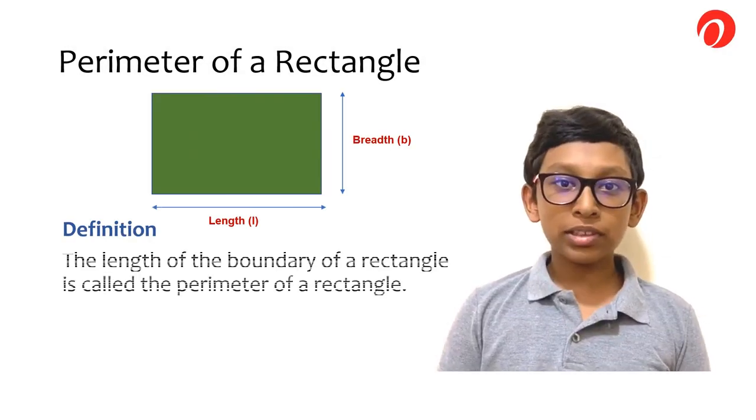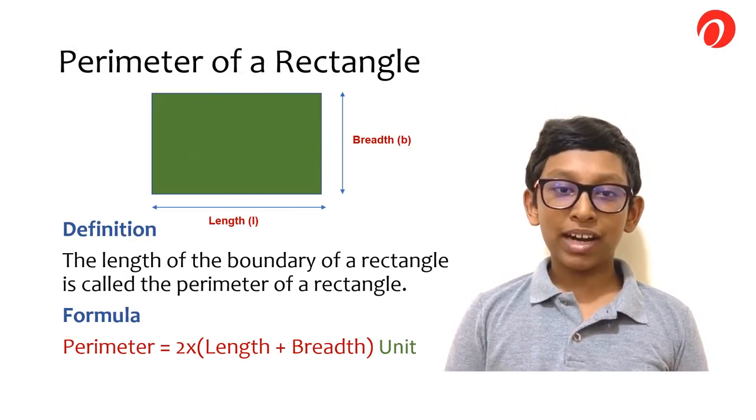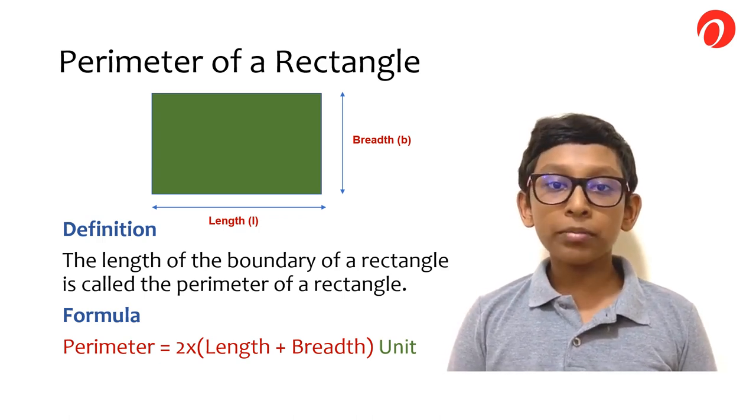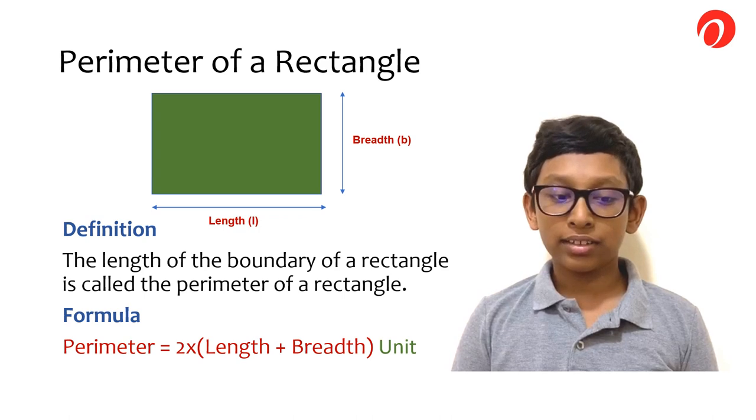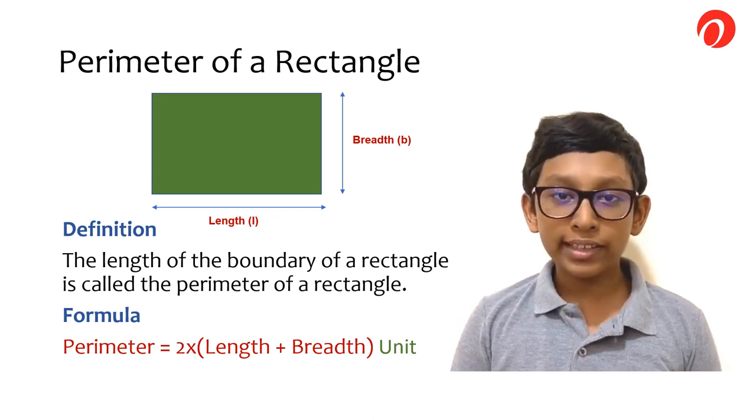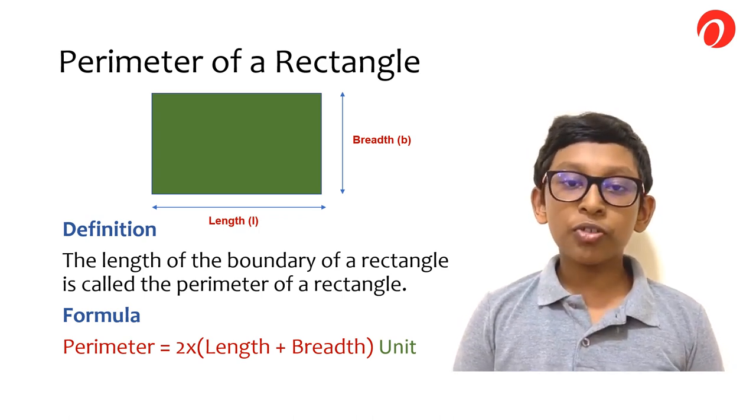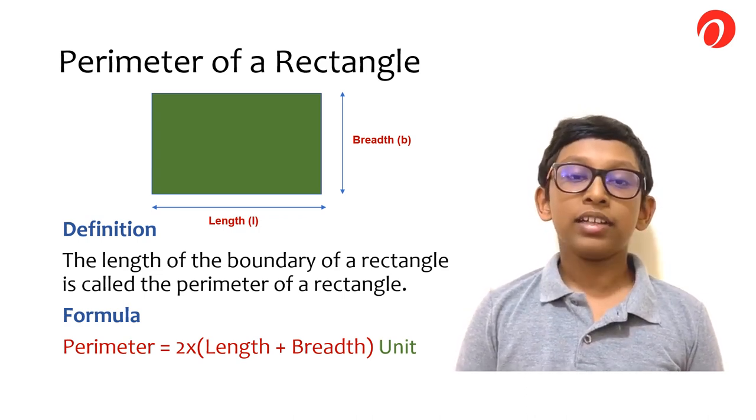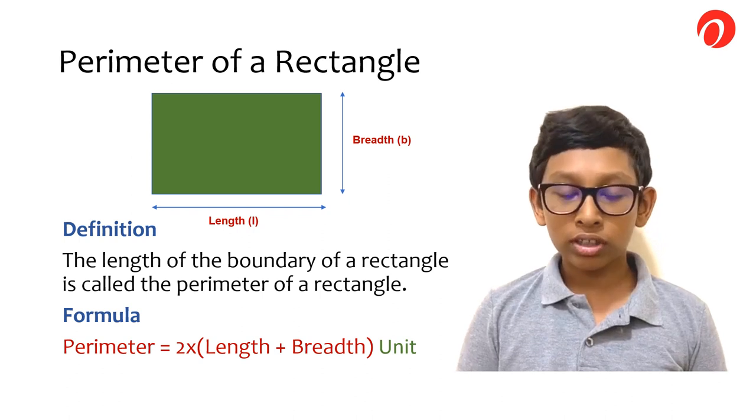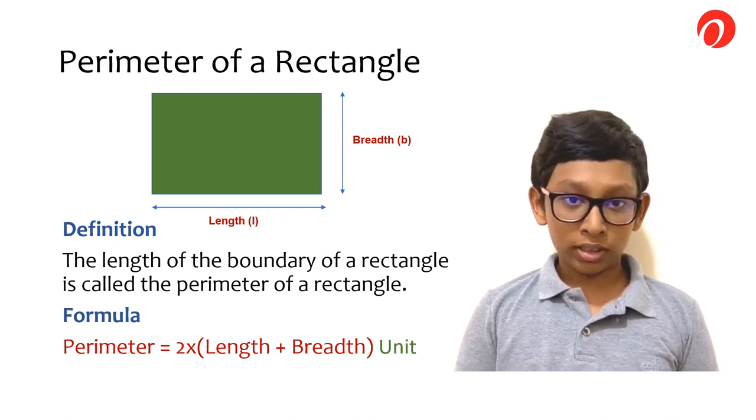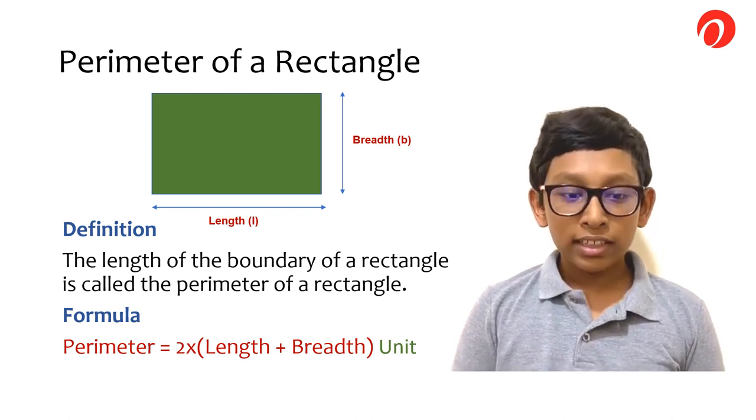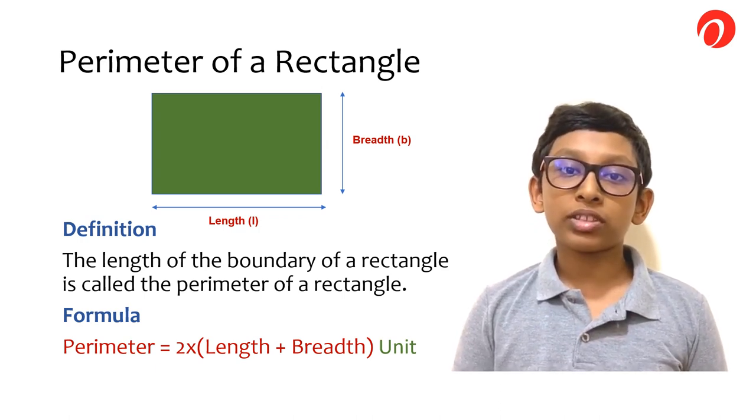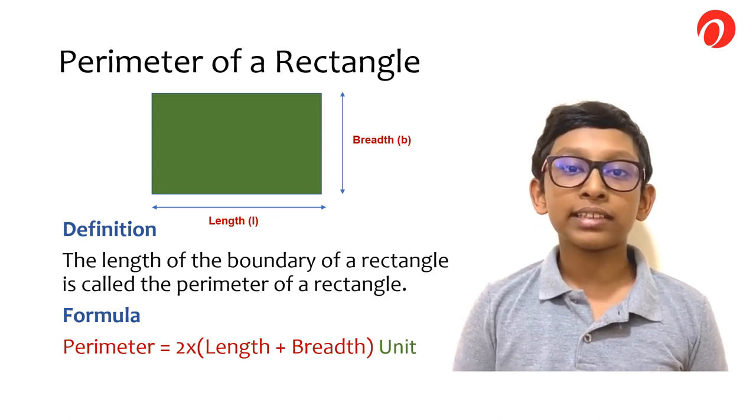The perimeter of a rectangle can be defined as the length of the boundary of a rectangle. The formula for the perimeter of a rectangle is 2 into length plus breadth. For example, if I have a rectangle that is 3 cm wide and 5 cm long, 5 plus 3 is equal to 8 times 2 is equal to 16. So the perimeter of the rectangle is 16 cm.